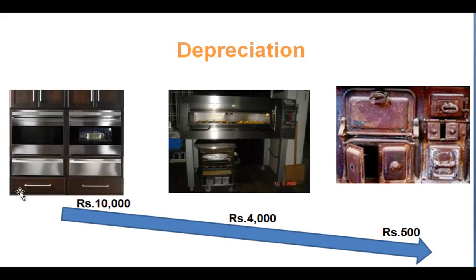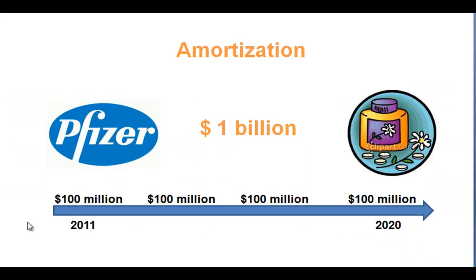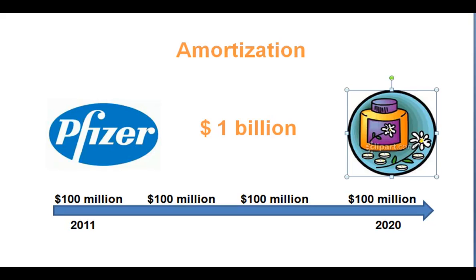To get to real recurring operating income, people use EBITDA — they add back depreciation and amortization to operating income. Before we get there, let's quickly cover amortization. Depreciation is for long-term tangible assets — an oven or furniture, something you can touch and feel. Amortization is the same concept but applied to intangible assets. For example, Pfizer, the American pharmaceutical company, invested one billion dollars in R&D and developed a wonder drug — a memory drug where two tablets a day helps you remember everything.